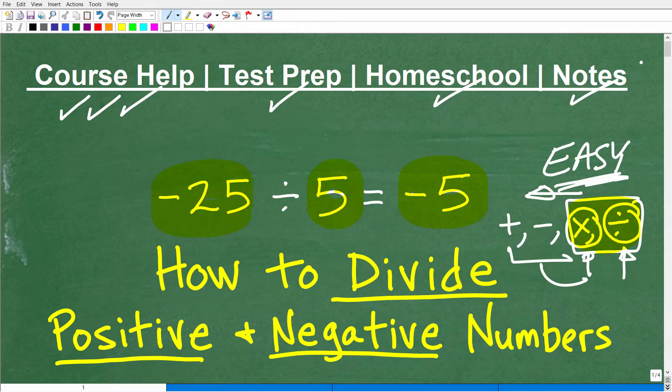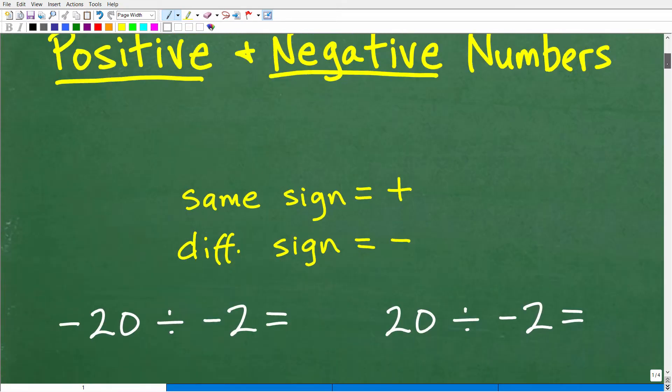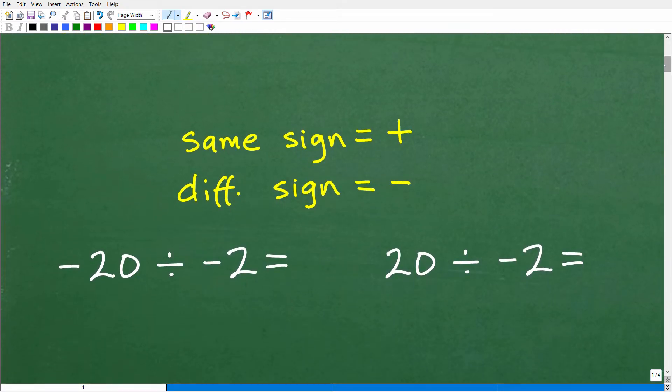All right, so let's get into the division of positive and negative numbers. Again, this is going to be easy. All right, so here is the rule. If the signs are the same, the answer is positive. And if the signs are different, the answer is negative. Again, easy, but let me clarify exactly what I'm talking about with this rule.